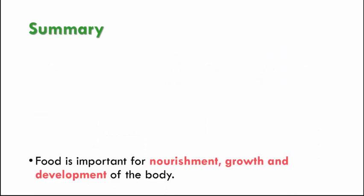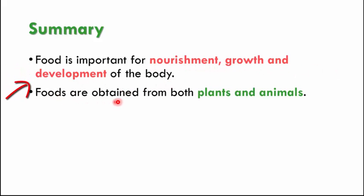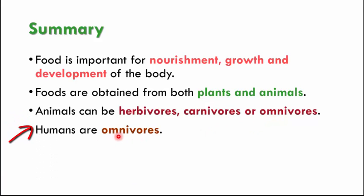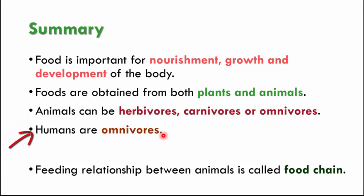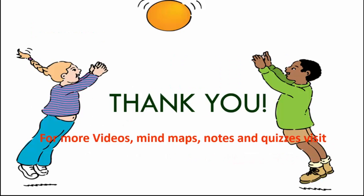In this video, we learned that food is important for nourishment, growth and development of the body. Foods are obtained from both plants and animals. Animals can be herbivores, carnivores or omnivores. We also learned that humans are omnivores. The feeding relationship between animals is known as food chain.